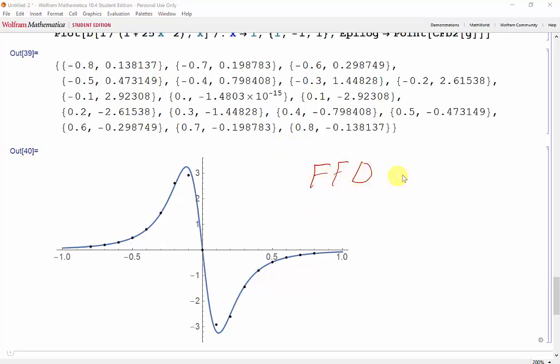We also saw how the graph shifts depending on which method we use. FFD shifts to the left, BFD shifts to the right, and CFD has very minimal shifts.